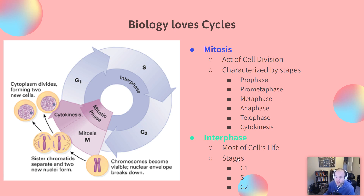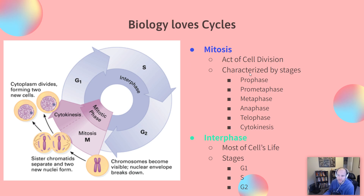In this cell cycle, we have multiple stages: G1, S, and G2, which are all part of interphase. And then we have the M phase for mitosis. Mitosis is characterized by several stages: prophase, prometaphase, metaphase, anaphase, telophase, and cytokinesis. Let's break down what these all are.